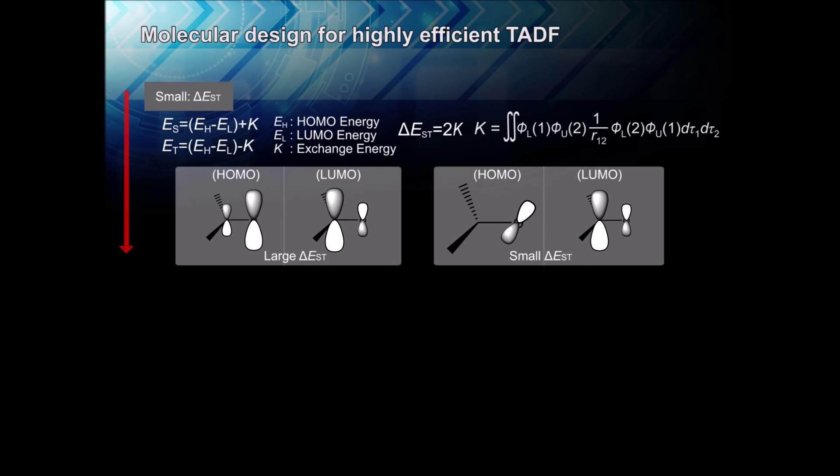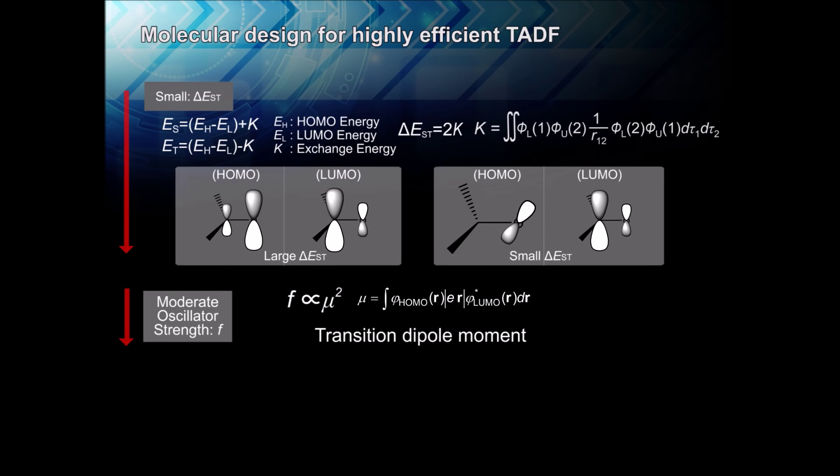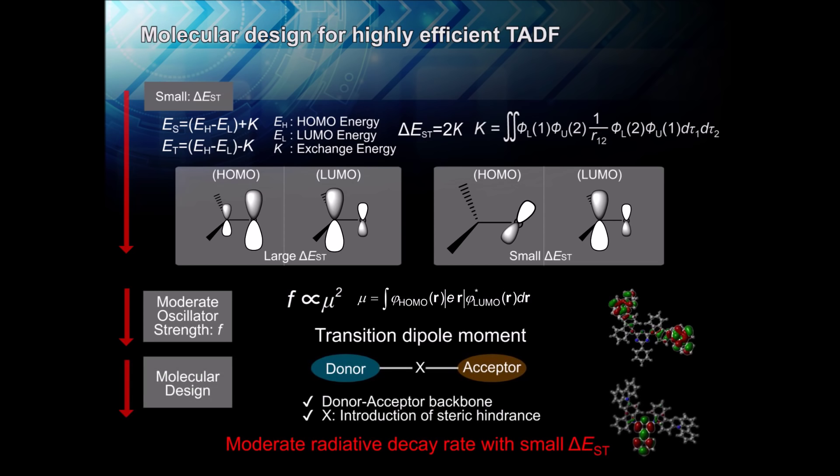While delta EST can be decreased by reducing the overlap of a molecule's highest occupied molecular orbital and lowest unoccupied molecular orbital, or HOMO and LUMO, reducing overlap causes the oscillator strength, an indicator of emission rate, to also decrease.